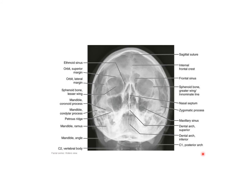This is another Waters view showing the frontal sinus, orbit, greater and lesser wing of sphenoid, nasal septum, ethmoidal air sinus just below the frontal air sinus, maxillary air sinus below the orbit, then the dental arch and the condylar and coronoid processes of the mandible.